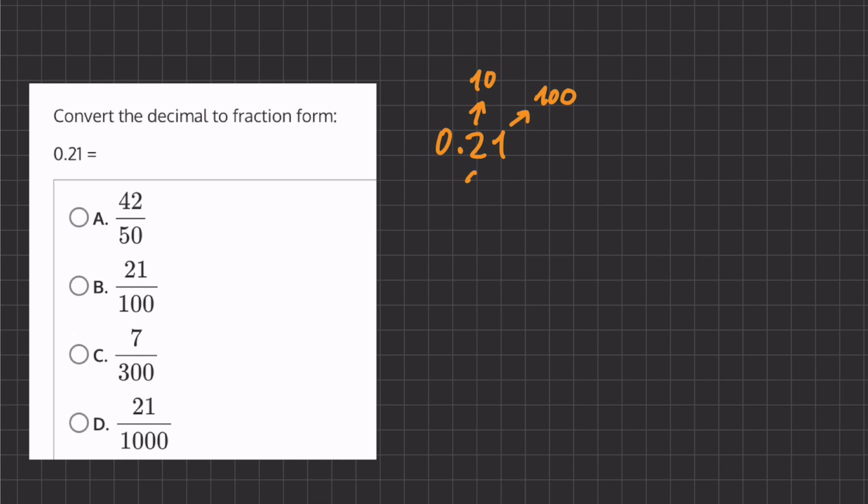Now, if we have a 2 right here, that means we have 2 out of 10 in our tenths place, and we have 1 out of 100 in our hundredths place. So, we can add these 2 fractions to get our whole fraction,